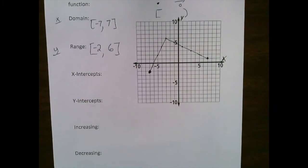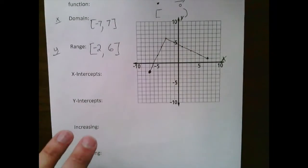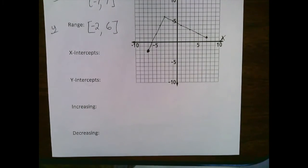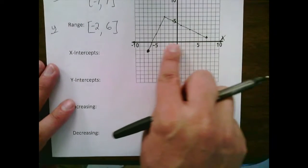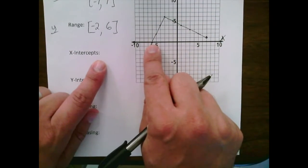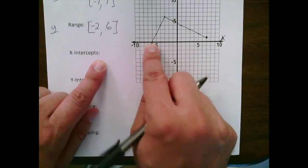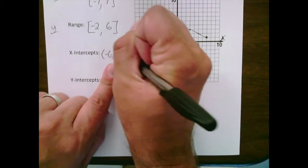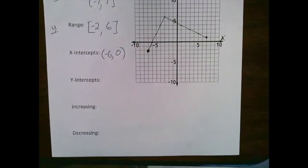Next are x-intercepts and y-intercepts. X-intercepts are any points where the graph crosses the x-axis — you could have one, none, or several. In this case, we only cross the x-axis at one point. All we do is name the coordinates: we cross at x equals negative 6 and y equals 0, so the x-intercept is (−6, 0).